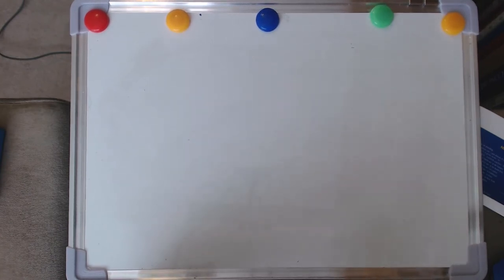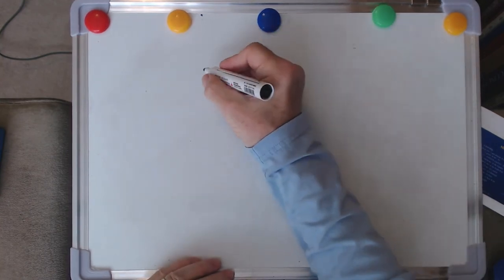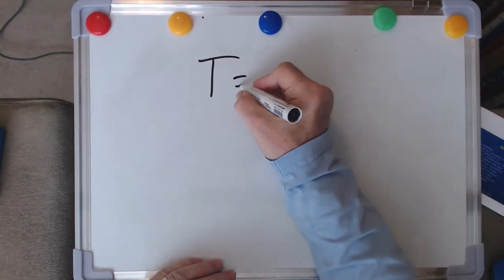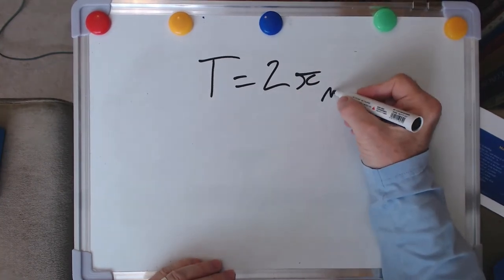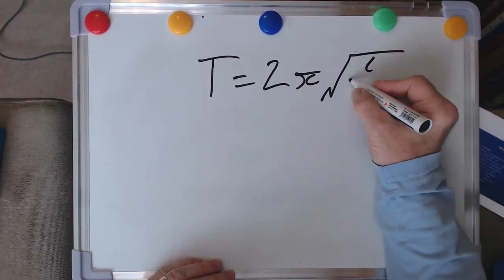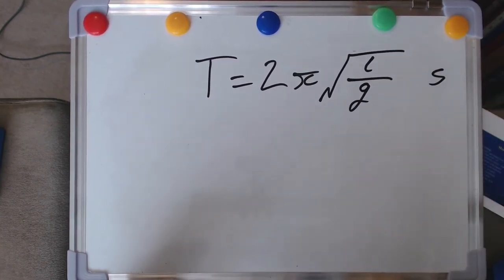Okay, so hopefully you believe me that our equation then could do what we said it could do. So here it is again. T is 2 pi root of l over g and we're measuring that in seconds.